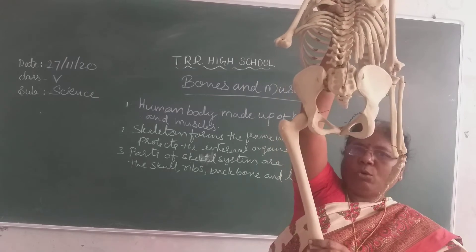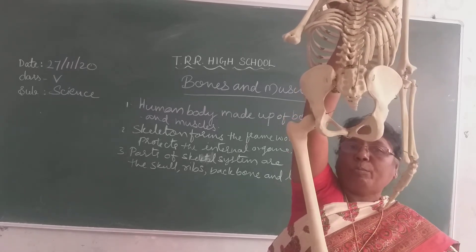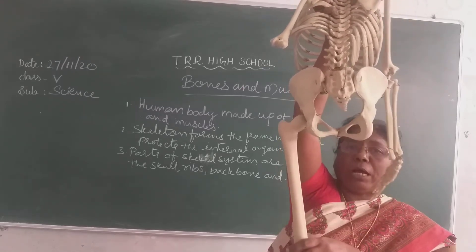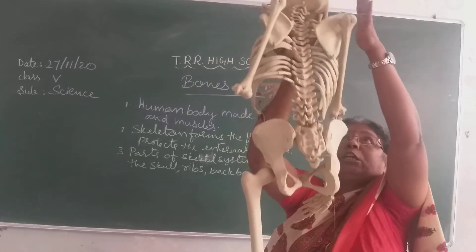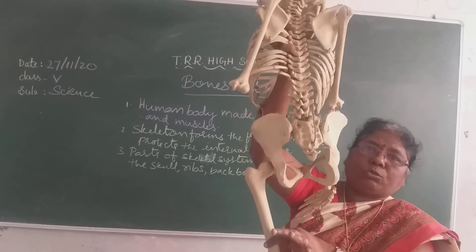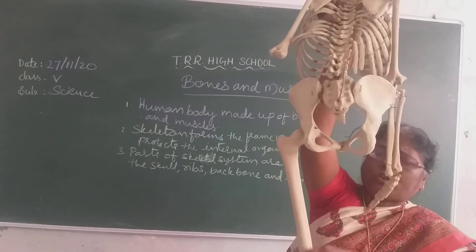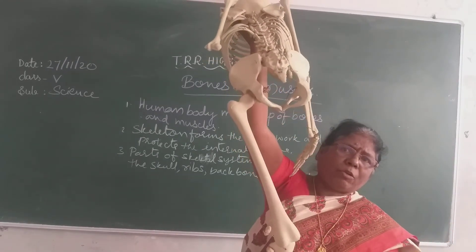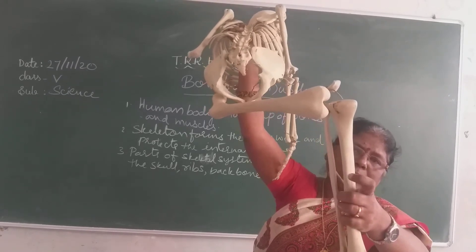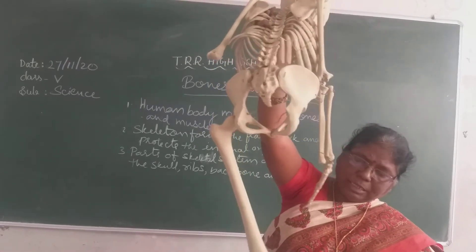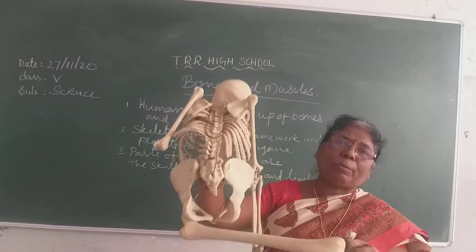Next, coming to hind limbs. Hind limbs are connected with the hip bone. This is also made of two bones. This is called the femur — the thigh bone — which is the longest and strongest bone in our body. The weight of the body is held by these bones. The other part of the leg is the tibia and fibula — two bones. This is connected with the knees at the knee joint, which helps in bending and movement.